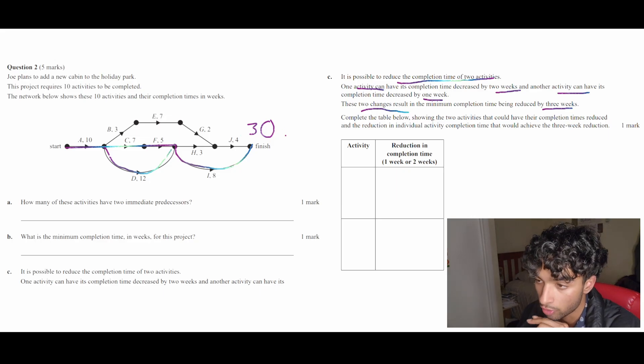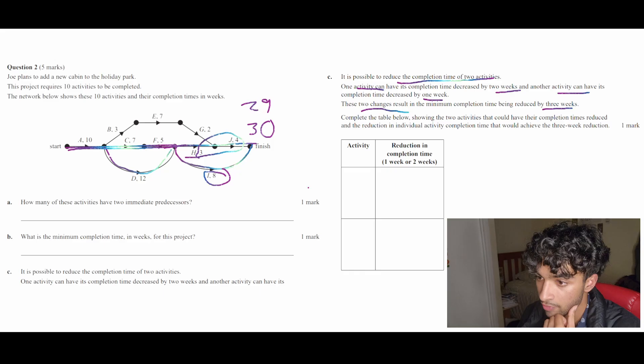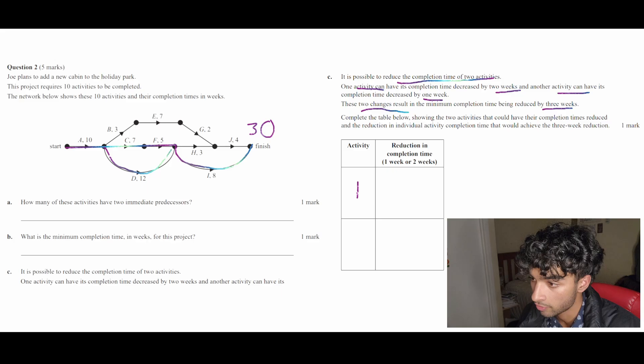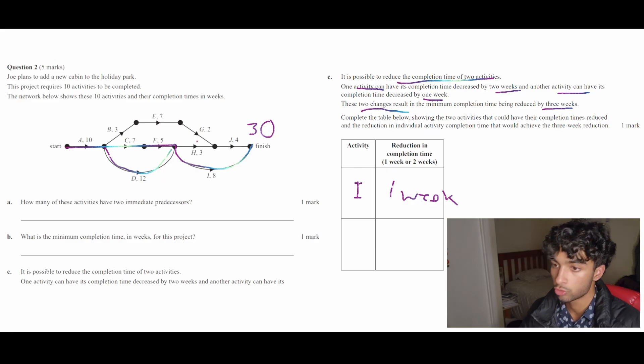But if we look at the next longest, it's just straight here and that is 29. So as we can see, the difference here is 8, whereas going straight left is 7. So if we reduce I to 7, which is a reduction of one week, then we can reduce the overall critical path or the overall minimum completion time to 29. So that means we do activity I and that will be a one week reduction. And then what else can we do to reduce this overall completion time?